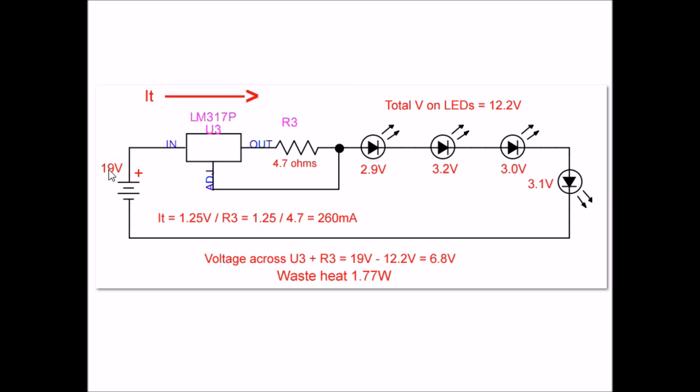We have a current flow of 260 milliamps. 1.25 divided by 4.7 is going to give you approximately 260 milliamps. What's important here is the 260 milliamps flowing through U3 and R3 times 6.8 volts means I generated 1.77 watts of useless heat.